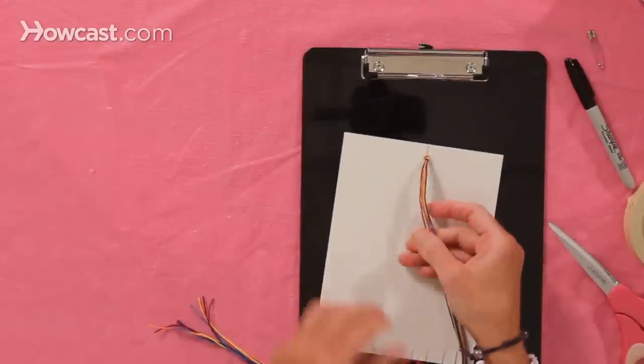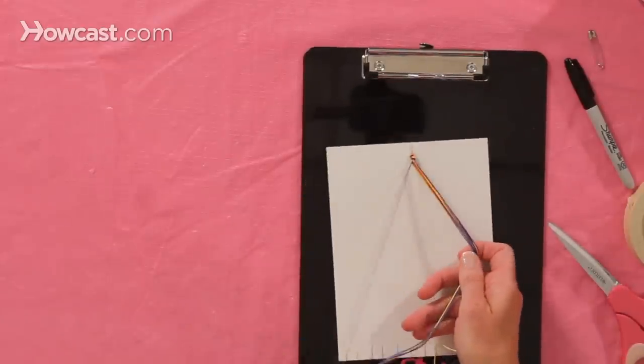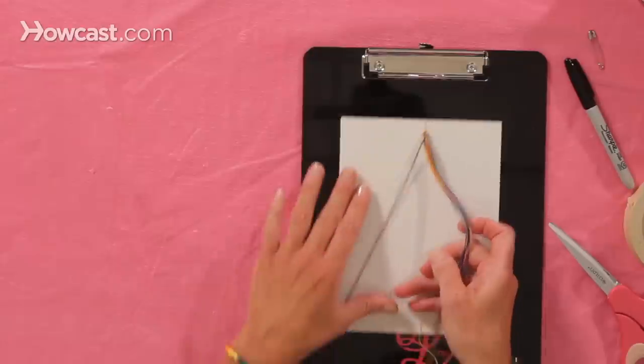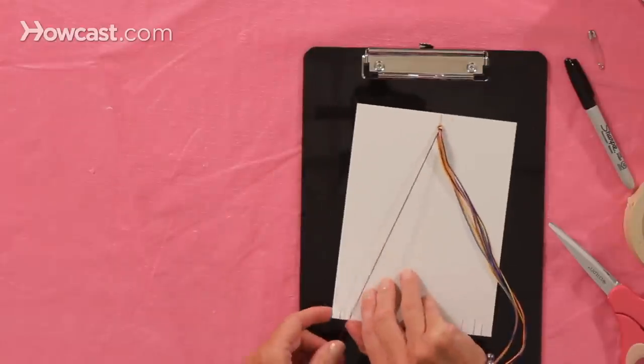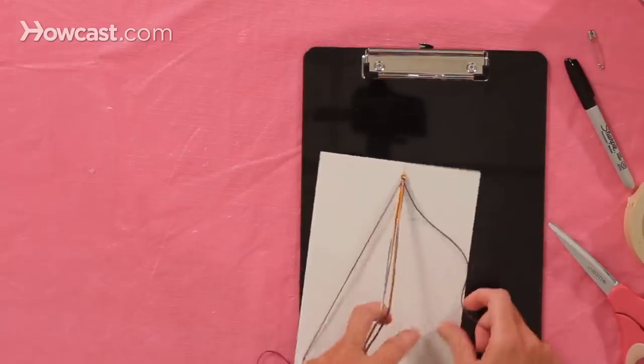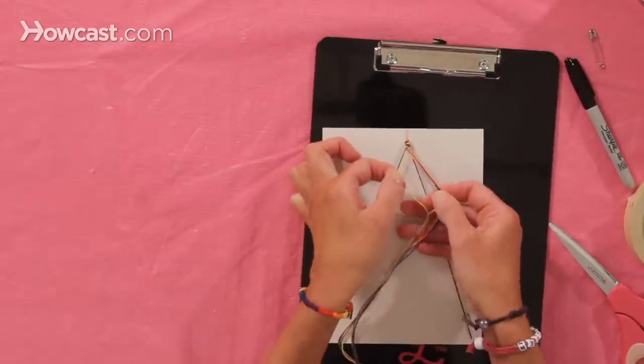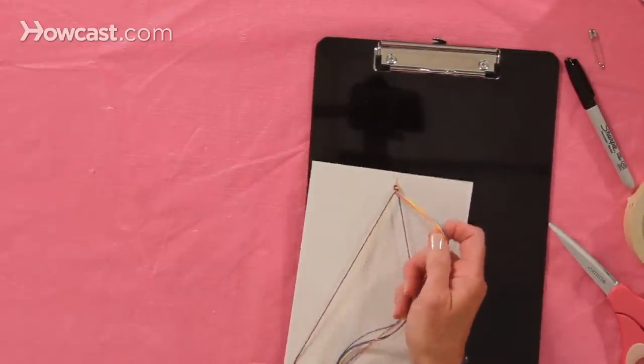And now we separate our strings. The key to this bracelet is the setup of the color pattern. Because you have two of each color, you want to put one color on this side, on the left, and you're going to put the same exact color directly on the other side. So now we're going to put yellow next to the purple.